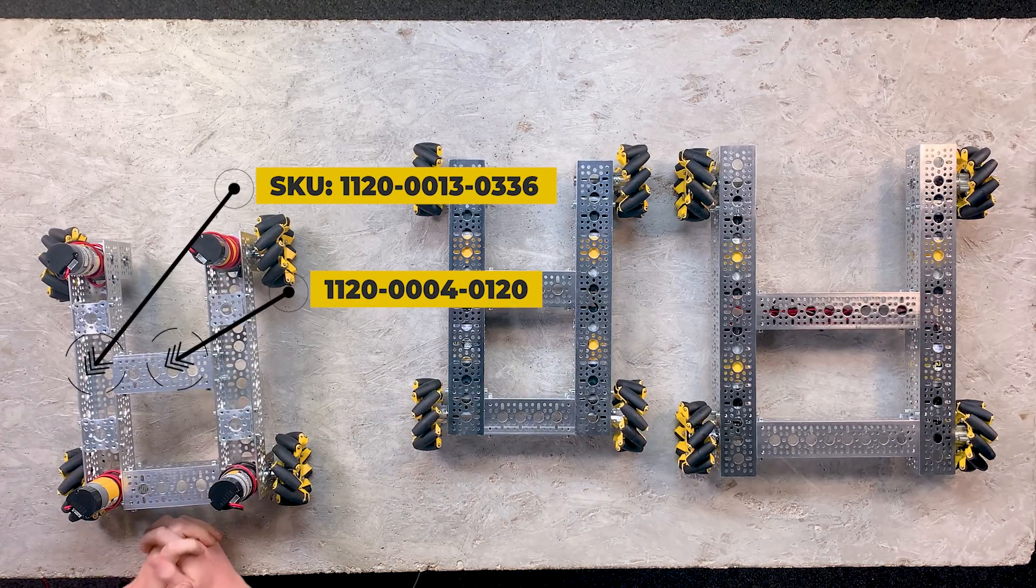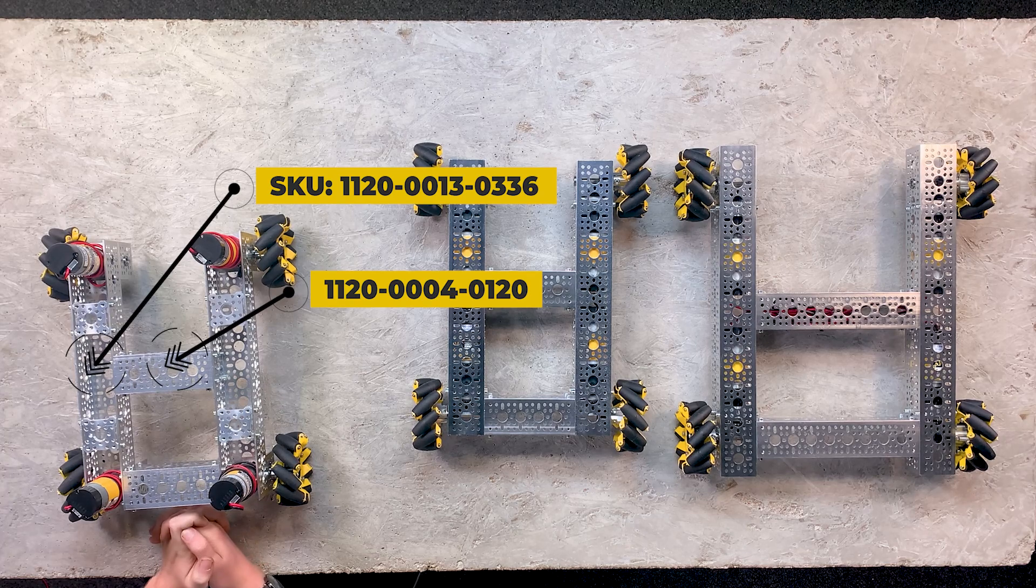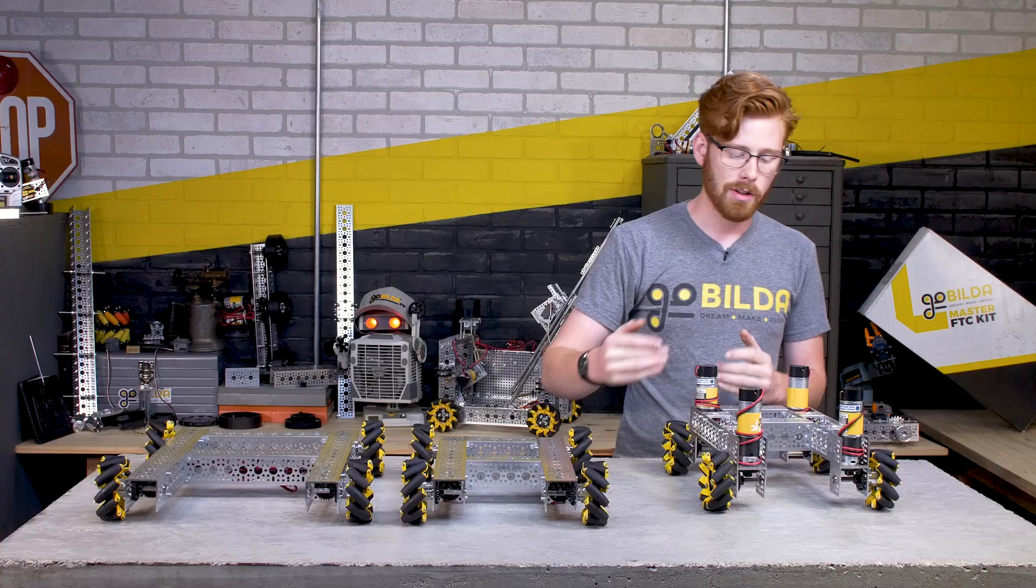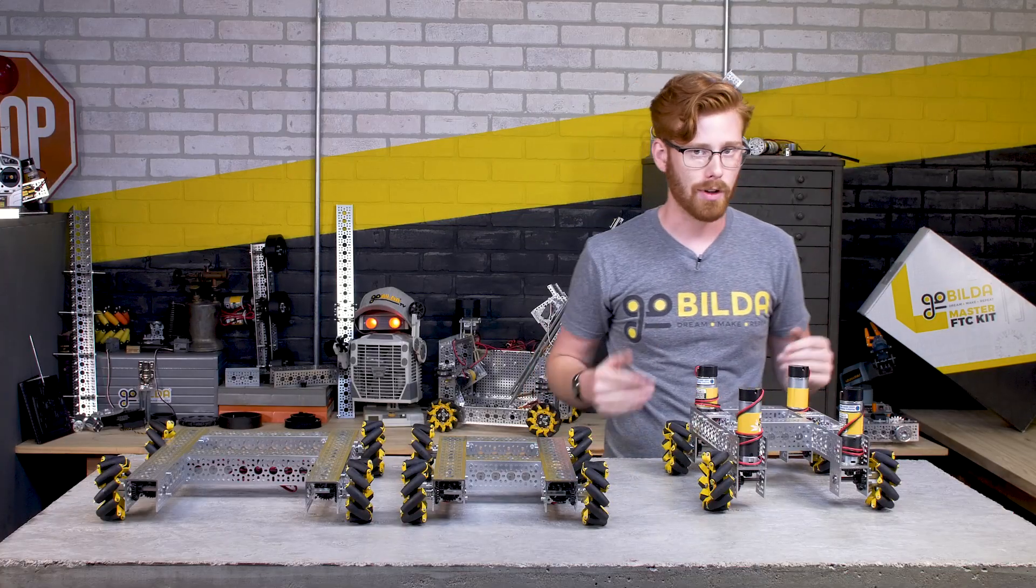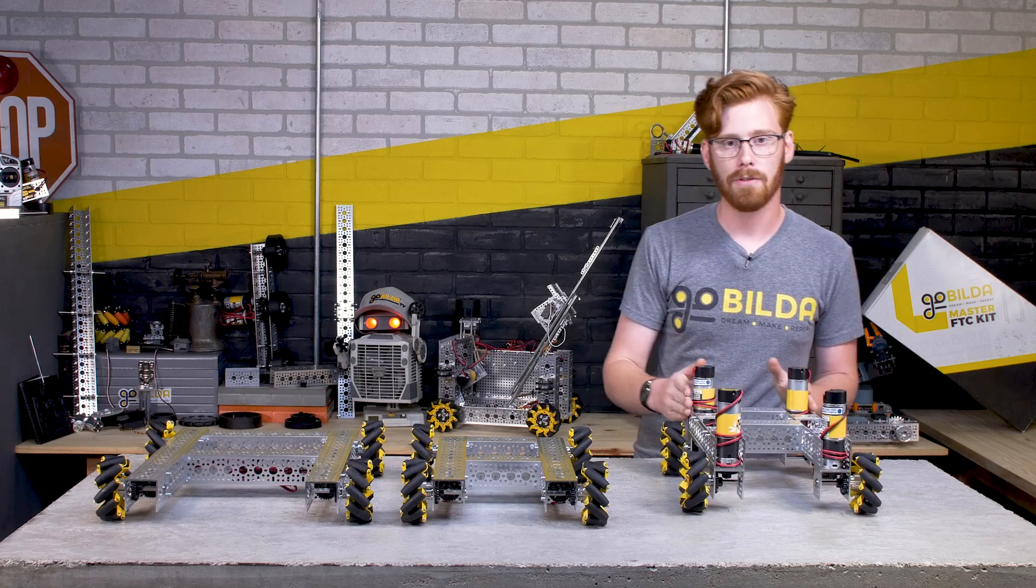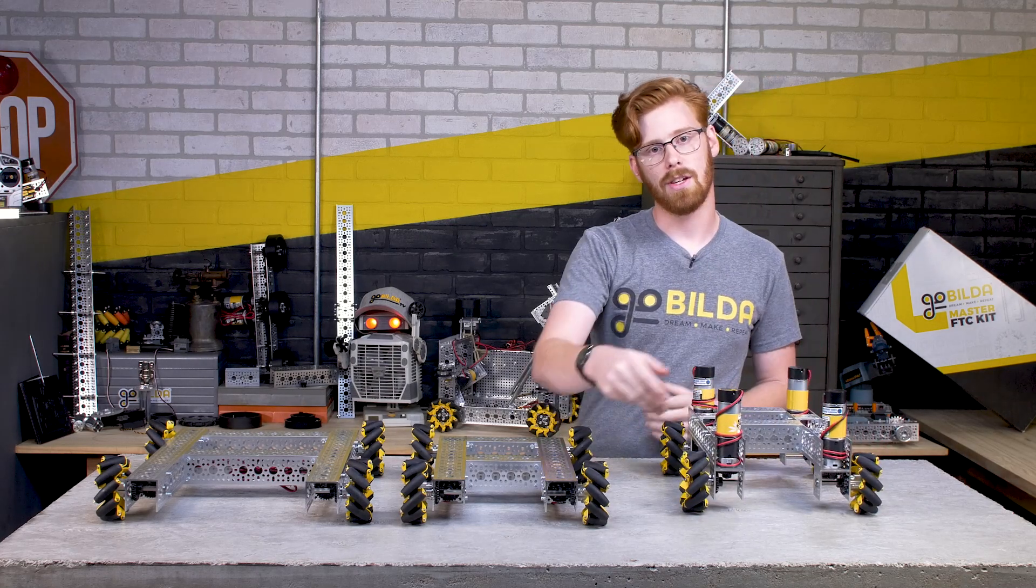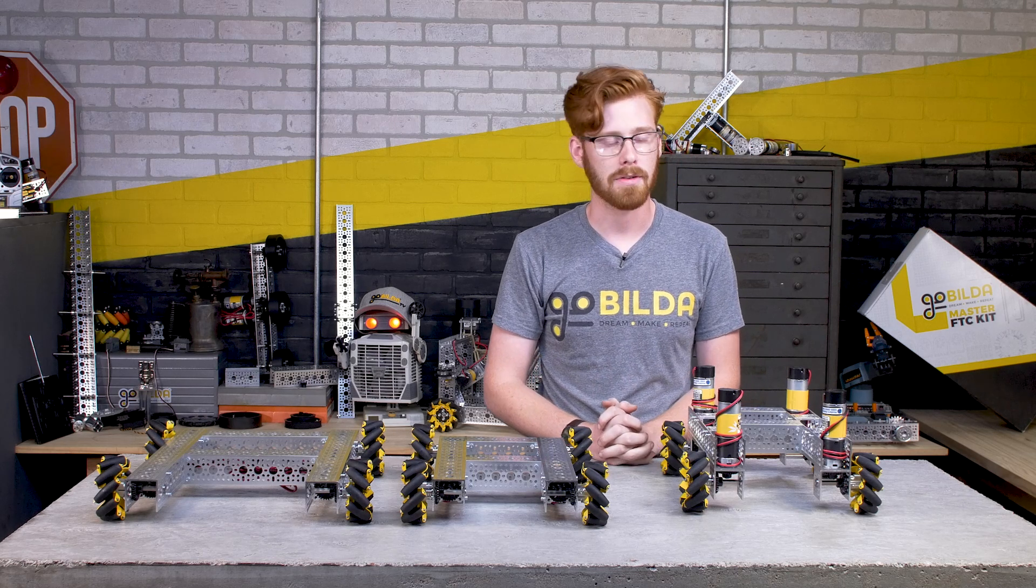But the cool thing about this chassis is you can make it about as wide or as short as you want. You could use 10 hole drive rail lengths and be really short, or go to the full 10 hole wide and 17 hole length if that's what your heart desires.